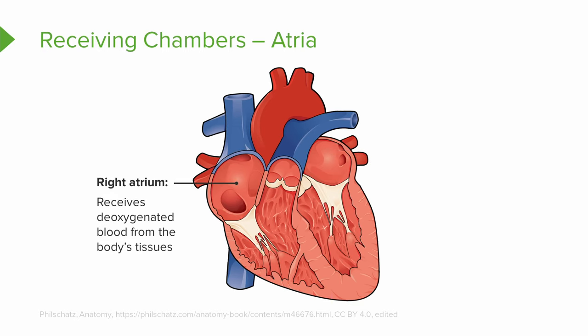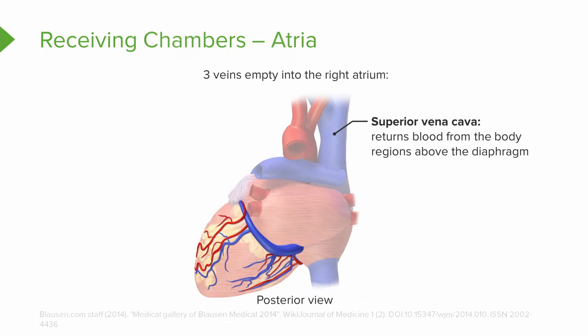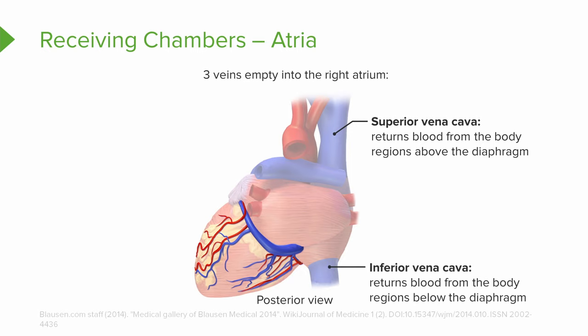The right atrium of the heart receives deoxygenated blood that is returning to the heart from the body's tissues. There are three main veins that empty into this right atrium: the superior vena cava, which returns blood from regions above the diaphragm; the inferior vena cava, which returns blood from regions below the diaphragm; and the coronary sinus, which returns blood from the coronary veins in our coronary circulation.